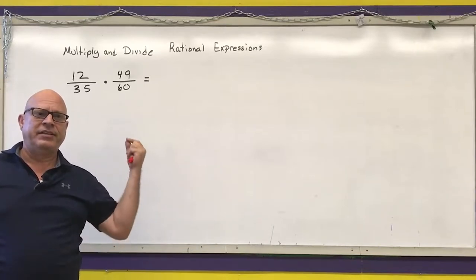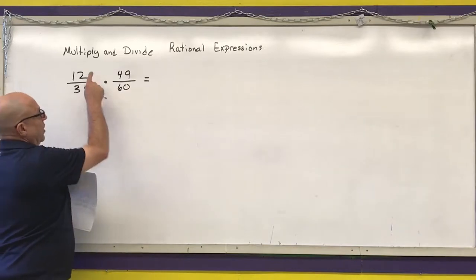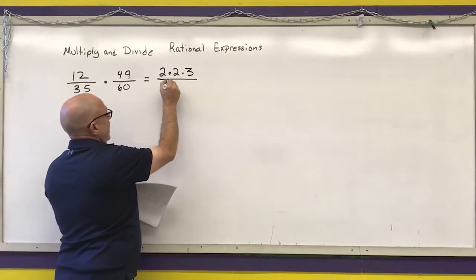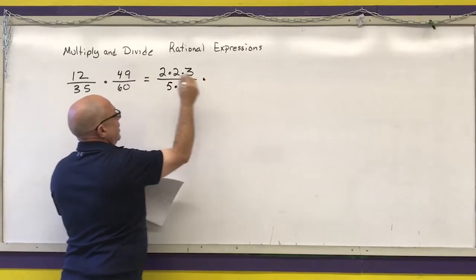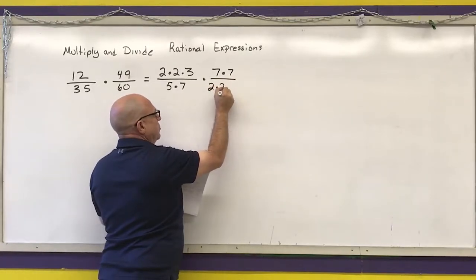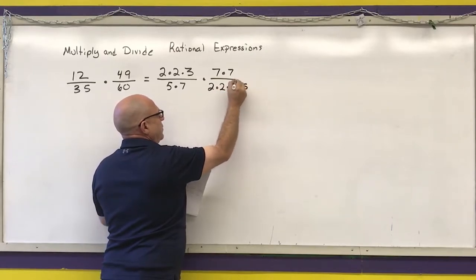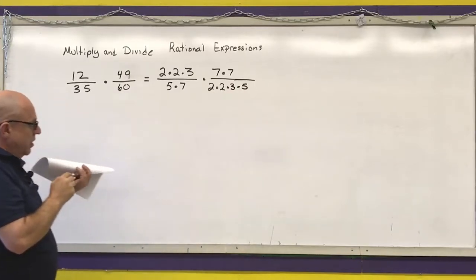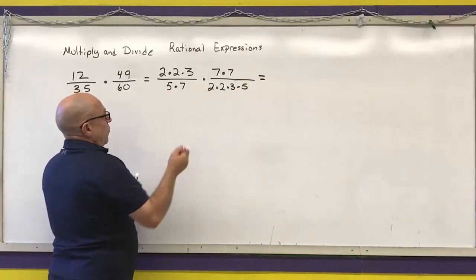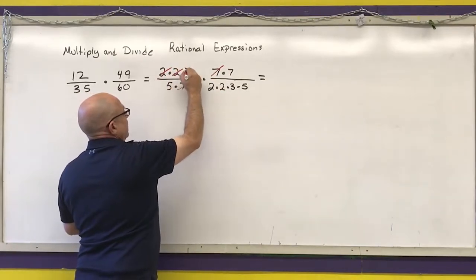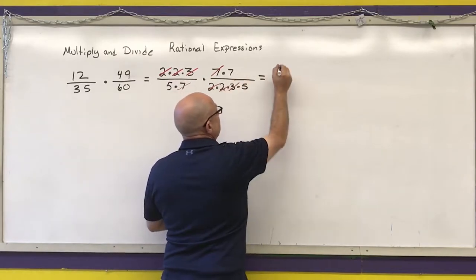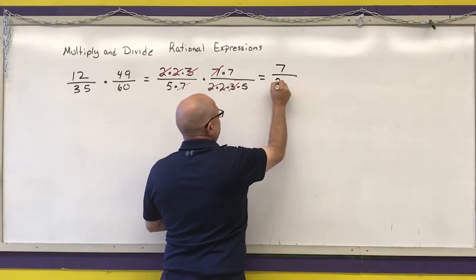It's a lot easier to simplify smaller numbers than larger ones. So twelve is two times two times three; thirty-five is five times seven; forty-nine is seven times seven; sixty is two times two times three times five. That seven can cancel with that seven, and that two, two, and three can cancel with the corresponding two, two, and three. My final answer would be seven over five times five, which is twenty-five.